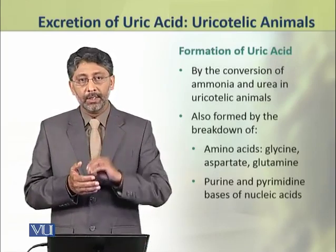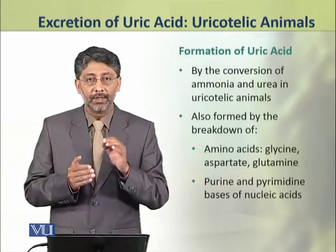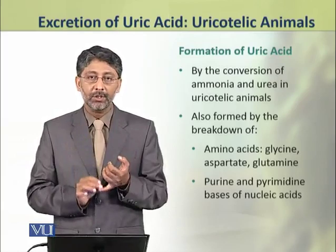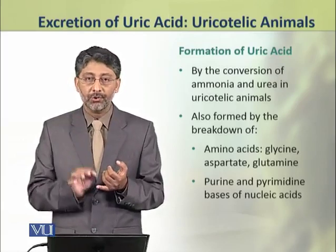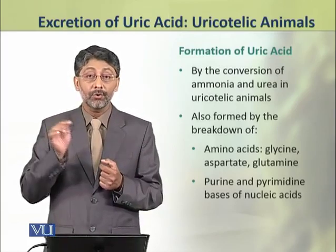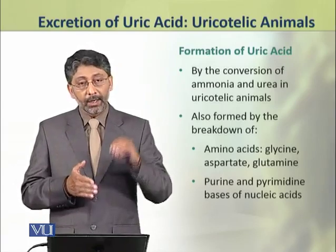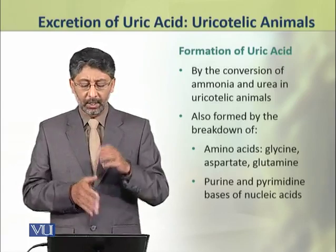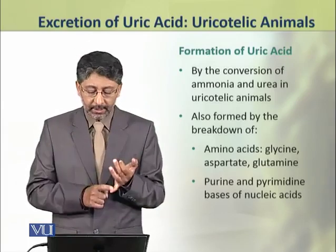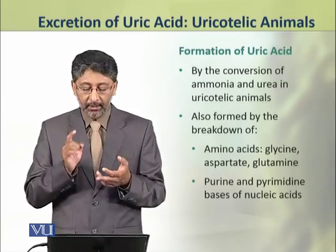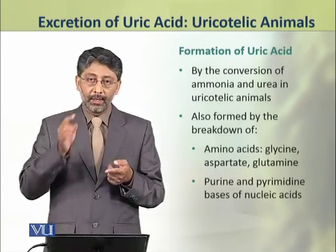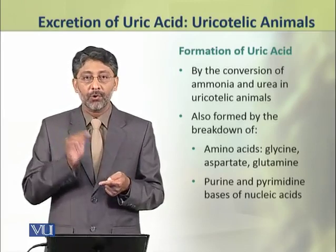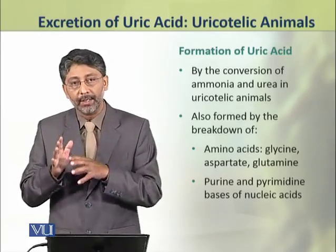Uric acid is formed by the conversion of ammonia and urea in uricotelic animals. It is also formed by the breakdown of amino acids glycine, aspartate and glutamine. It is also formed by the metabolism of pyrimidine and purine bases of nucleic acids.